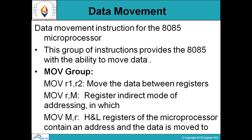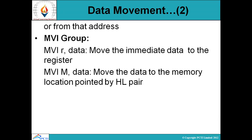The MVI group — MVI R, data — moves immediate data directly to a register. MVI M, data moves the data to the memory location pointed to by the HL register pair. This instruction moves data directly to the memory location referenced by HL.